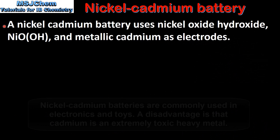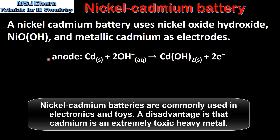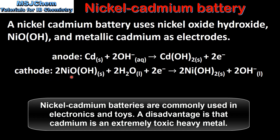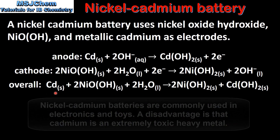Next we look at nickel cadmium batteries. A nickel cadmium battery uses nickel oxide hydroxide and metallic cadmium as electrodes. At the anode cadmium is oxidized to form cadmium hydroxide. At the cathode nickel oxide hydroxide is reduced to form nickel hydroxide. Here we have the overall equation for the reaction. When the battery is recharged the reverse reactions take place.